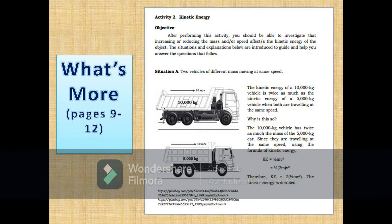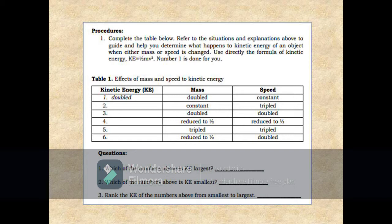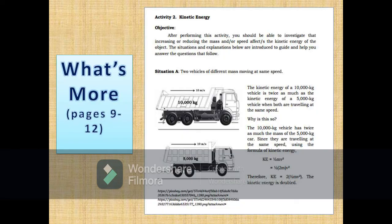What's more, pages 9 to 12. This comprises of activities for independent practice to solidify your understanding and skills of the topic. In this module, there are two activities. The first activity: kinetic energy. The objective: After performing this activity, you should be able to investigate that increasing or reducing the mass and or speed affects the kinetic energy of the object. The situations and explanations are introduced to guide and help you answer the questions that follow. As you can see in page 10, there is a table 1, effects of mass and speed to kinetic energy, and questions 1, 2, and 3. For you able to answer those questions and complete the table, you should refer to situation A and B. Use directly the formula of kinetic energy in answering the questions.